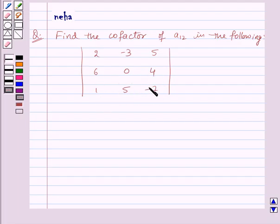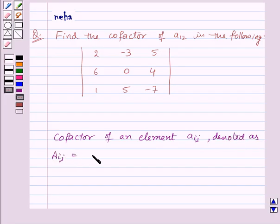Before moving on to the solution, let's learn how to find out the cofactor of an element. Note, cofactor of an element Aij denoted as Aij is given by minus 1 raised to the power i plus j into Mij.